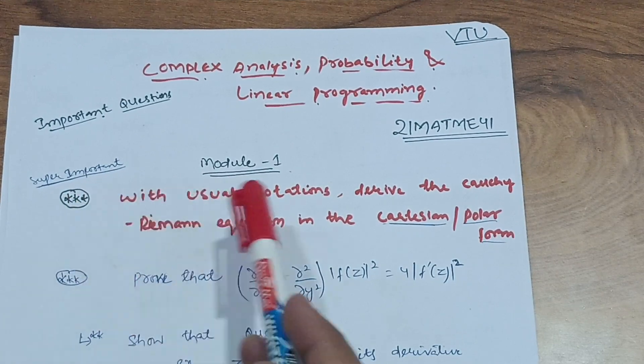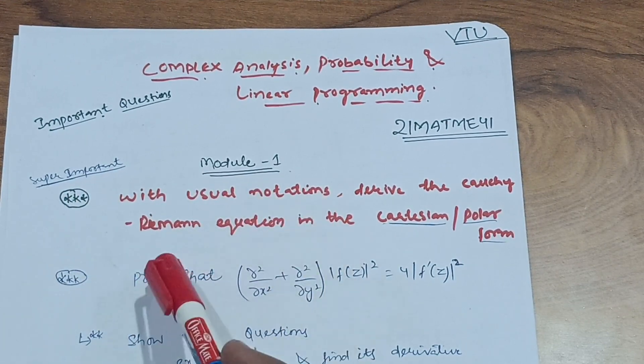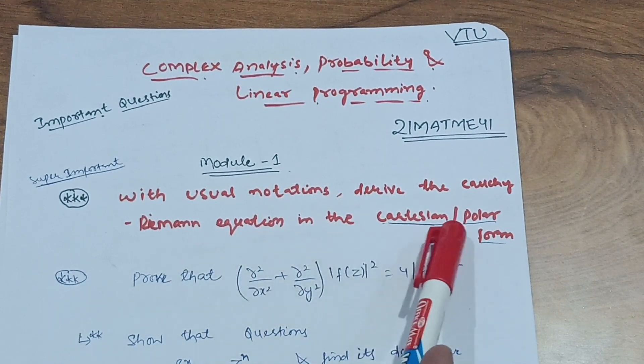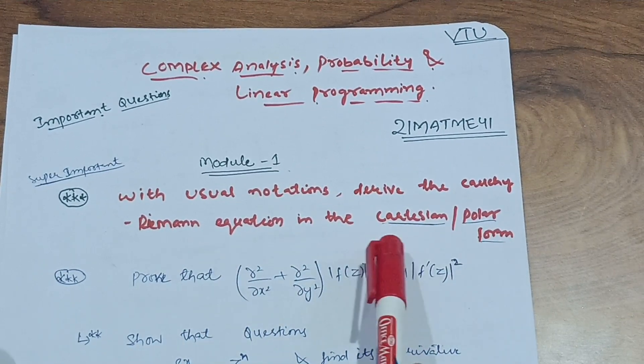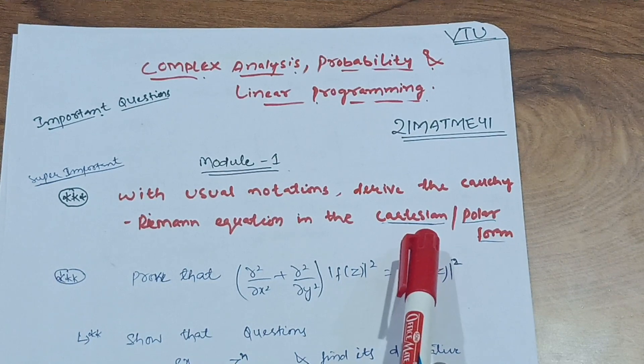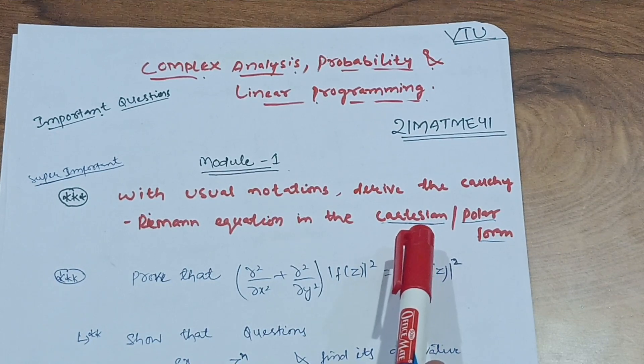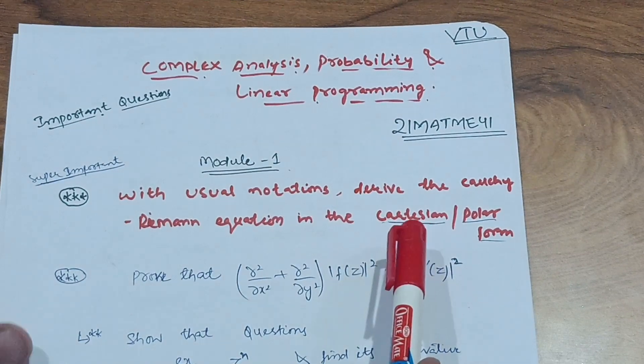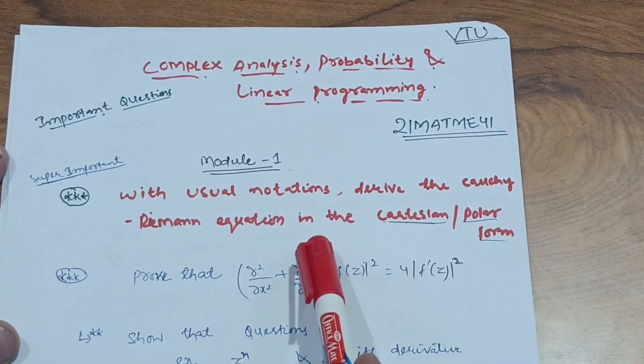You have to go through two derivations. With the usual notations, derive the Cauchy-Riemann equation in the Cartesian or polar form. Sometimes they will ask Cartesian and polar form. It is a definite question. No need to memorize. I have uploaded these videos and will provide the links in the description box so you can avail benefits from that particular derivation.